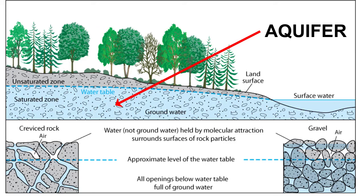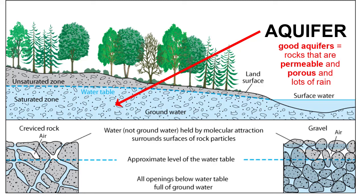The area under the ground where groundwater is stored is called an aquifer. Some areas of the world have aquifers that are large and filled with lots of water, and others have no aquifers. What are the ingredients for a good aquifer? Rocks with high porosity and permeability in an area with a lot of rain.